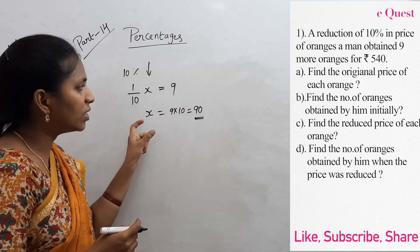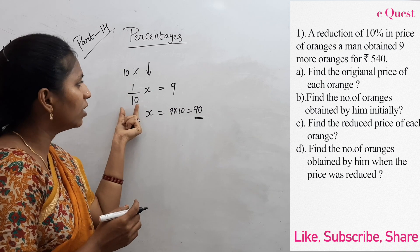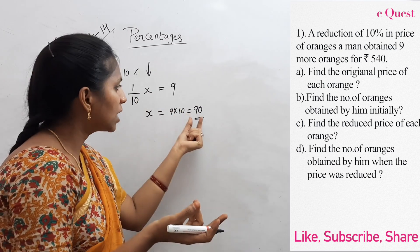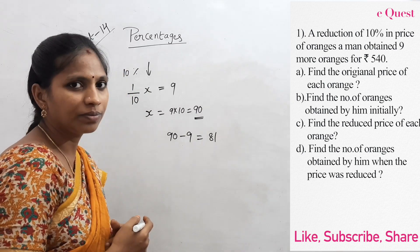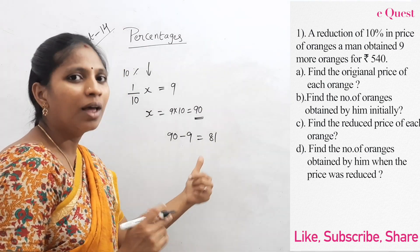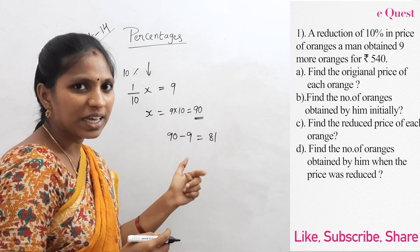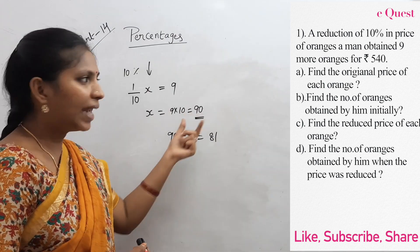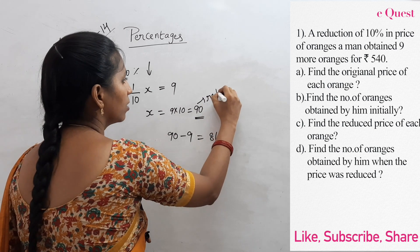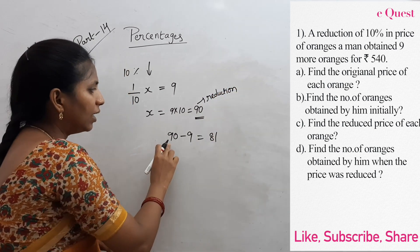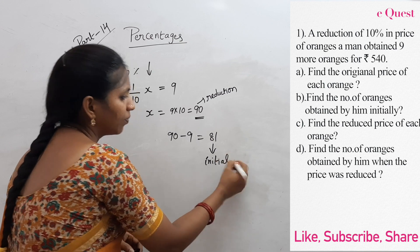What is the number of oranges before reduction? With 10 percentage reduction, that man got 9 more oranges, meaning 90 minus 9 oranges, that is 81. So 81 oranges are before reduction and 90 oranges are after reduction.